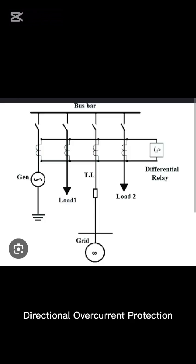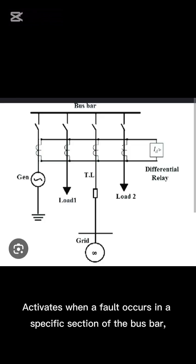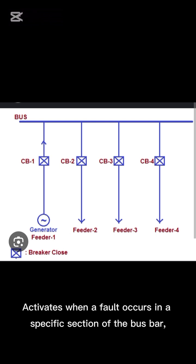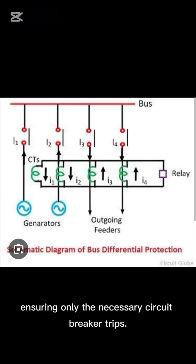Directional overcurrent protection. Activates when a fault occurs in a specific section of the bus bar, ensuring only the necessary circuit breaker trips.